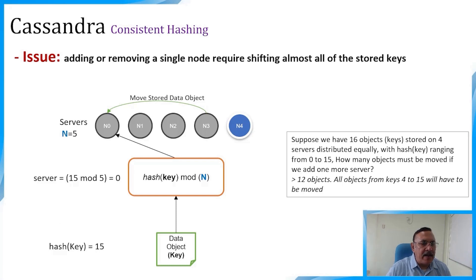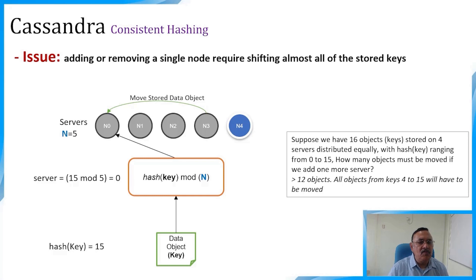In naive hashing, if we add node N4 (total servers = 5), then key 15 mod 5 = 0, so the object would now map to N0 instead of N3. With 16 objects stored on 4 servers, adding 1 more server requires moving more than 12 objects — all objects with keys 4 to 15 must be moved. This is the fundamental problem that motivated consistent hashing.